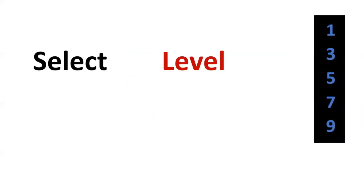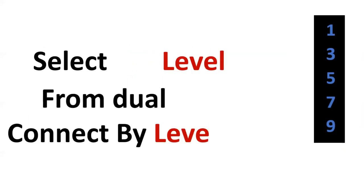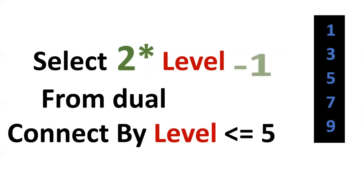Similarly, we want to print odd numbers from 1 to 10. By using CONNECT BY LEVEL we get 1, 2, 3, 4, 5. We need odd numbers, so first we multiply by 2 to get 2, 4, 6, 8, 10. Then we subtract minus 1, so the required odd number output can be achieved.